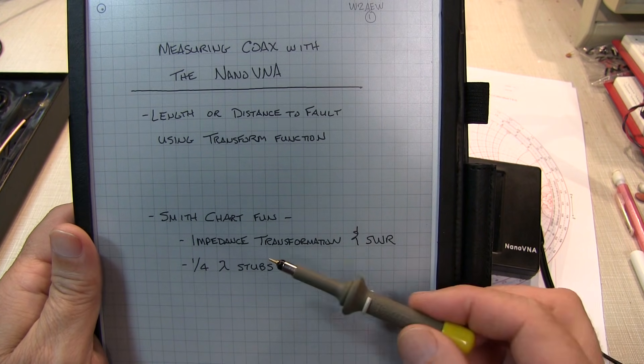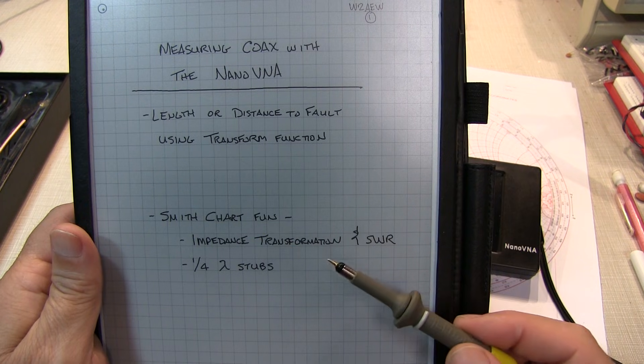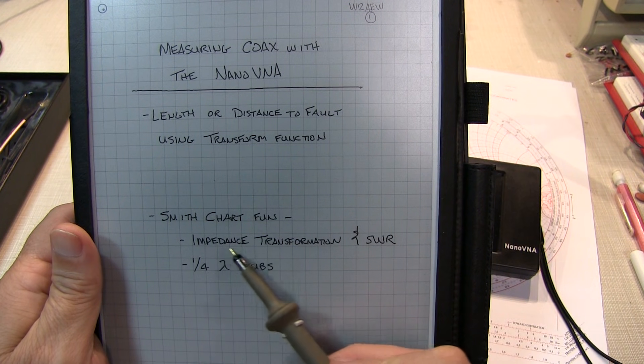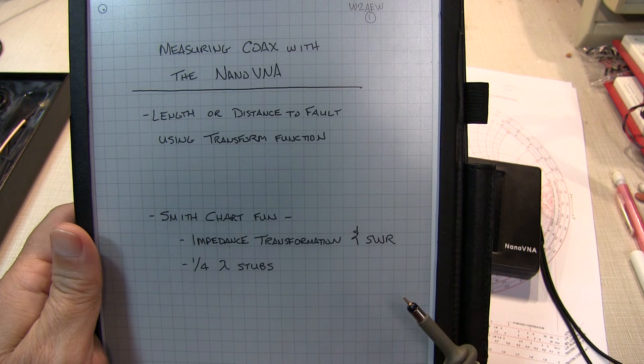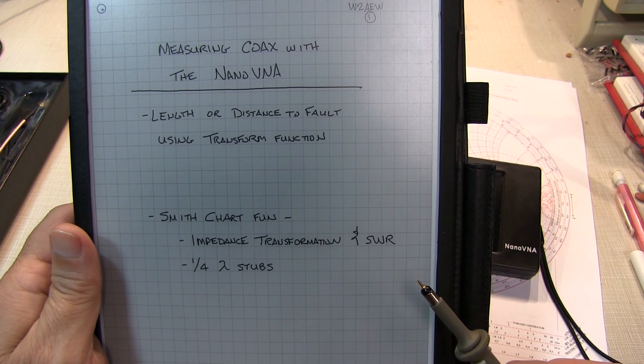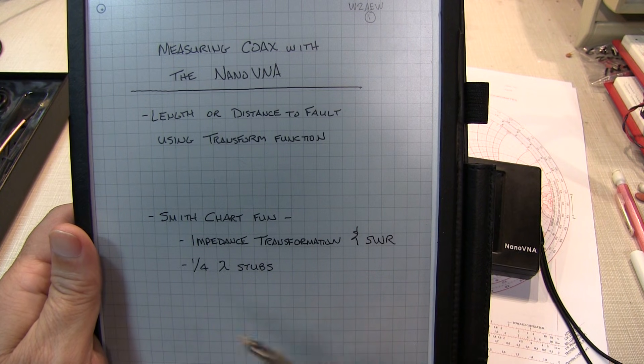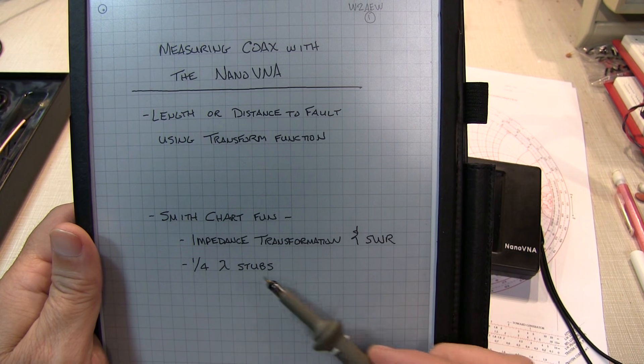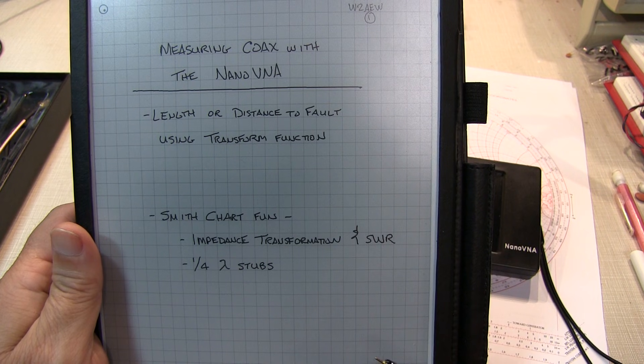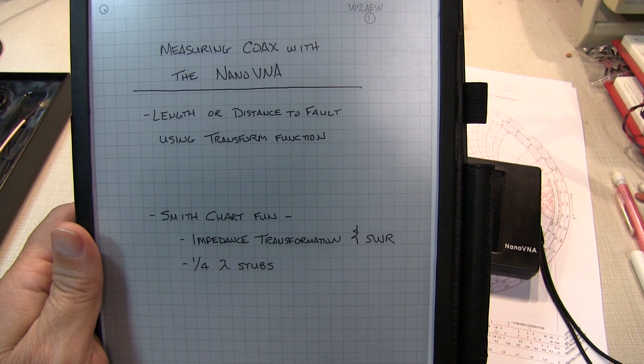In part two, we'll take a closer look at transmission lines and the Smith chart and talk about impedance transformation due to a coaxial line, the effective SWR with transmission line length, and even the magic of quarter-wavelength transmission line lengths or stubs. So let's get started.